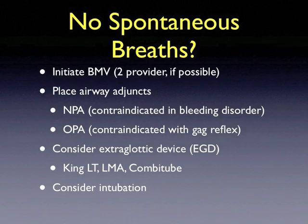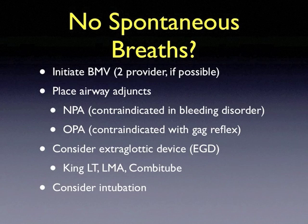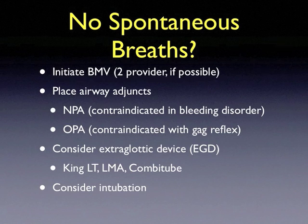If the patient isn't spontaneously breathing after you've opened the airway, initiate bag mask ventilation. When two providers are available, always do two-person bag mask ventilation. Always consider placing an airway adjunct — nasopharyngeal airways and oropharyngeal airways can get you out of many troublesome situations. You can ventilate over 95% of the population with bilateral NPAs and an OPA. NPAs are contraindicated in bleeding disorders; OPAs are contraindicated in patients with an intact gag reflex. If adjuncts fail, consider an extraglottic device such as the King LT, LMA, or Combitube. If all those efforts have failed, consider intubation.